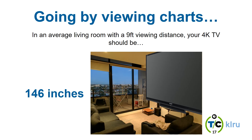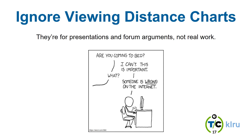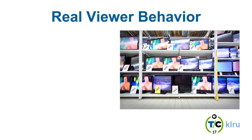What does that tell us? In an average living room with a nine-foot viewing distance, your 4K TV should be 146 inches diagonal. Most of us — that would be fairly ridiculous in our living rooms. So the moral of the viewing chart story is: ignore viewing distance charts. They are for presentations and forming arguments; they are not for real work. What we really want to talk about is actual viewer behavior — what humans actually do in the real world.